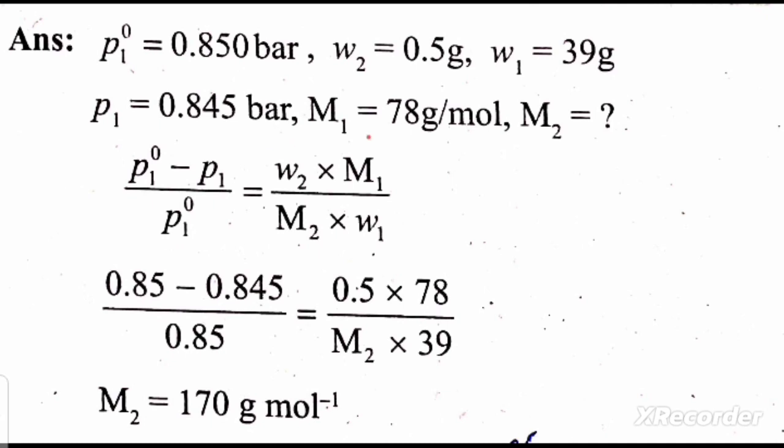Here, P1⁰ is the vapor pressure of pure benzene, which is 0.850 bar, and P1 is the vapor pressure of the solution after adding 0.5 grams of non-volatile solute.